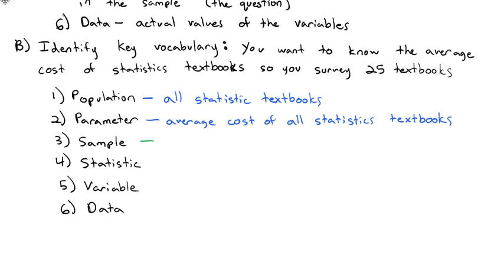That can be contrasted with our sample, slightly different. Now, our sample is the smaller group, the subset we're looking at. This is the 25 textbooks. And then the statistic has to describe that sample. It's our characteristic of interest for the sample. It is the average cost of, and then tie it back to the sample, the 25 textbooks.